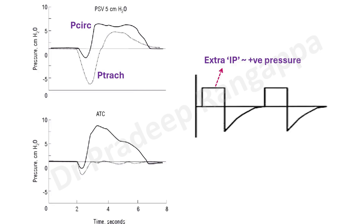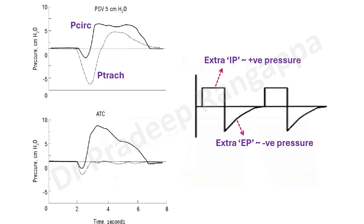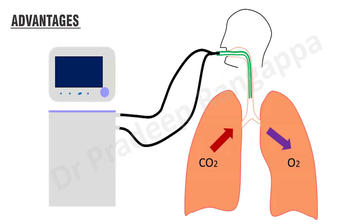ATC works in both inspiration and expiration. The extra inspiratory pressure it offers is positive pressure, and the extra expiratory pressure it offers is negative pressure. Physiologically, ATC minimizes the pressure difference between the circuit and the trachea, reducing the resistive load. In an exam, you can draw these graphs to show how ATC reduces the negative pressure difference that exists between the circuit and the trachea level.